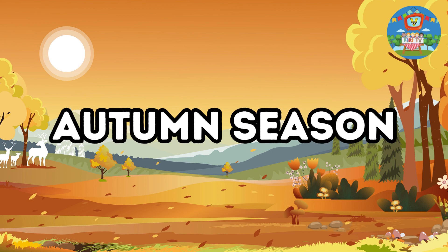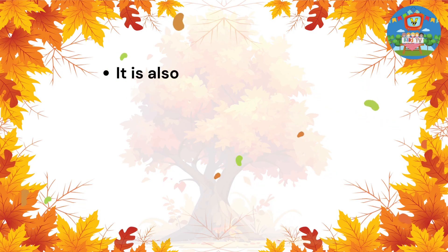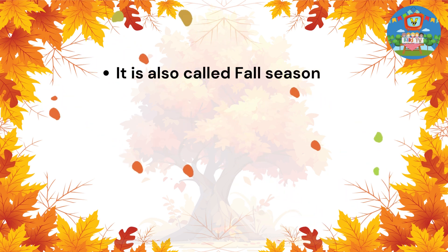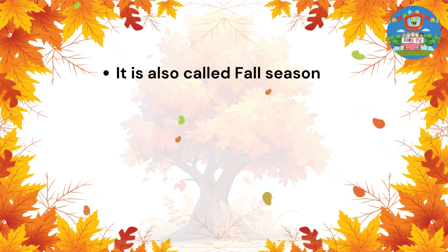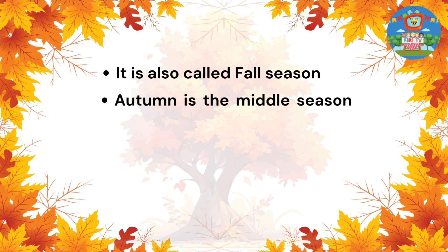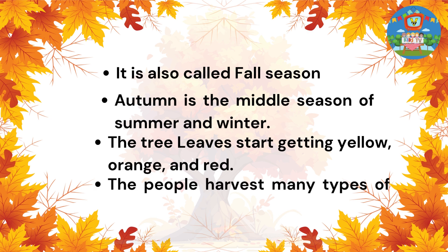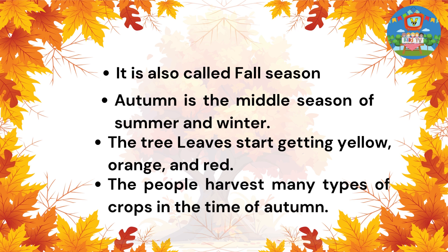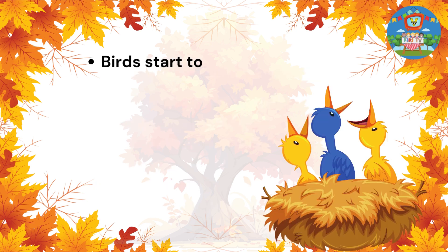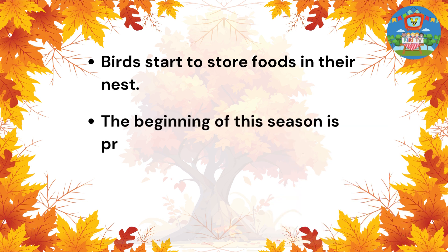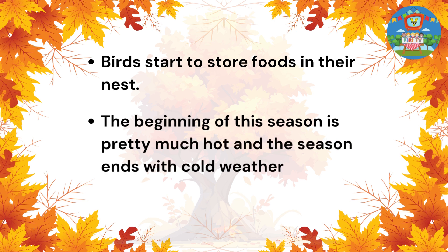Autumn Season. The autumn season is also called fall season. Autumn is the middle season between summer and winter. The tree leaves start getting yellow, orange, and red. The people harvest many types of crops in the time of autumn. Birds start to store food in their nest. The beginning of this season is pretty much hot and the season ends with cold weather.